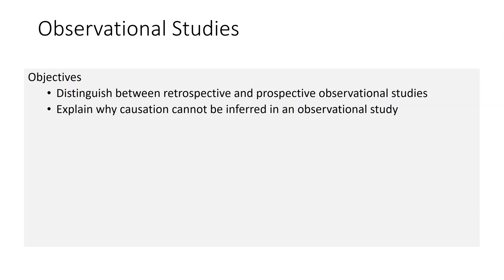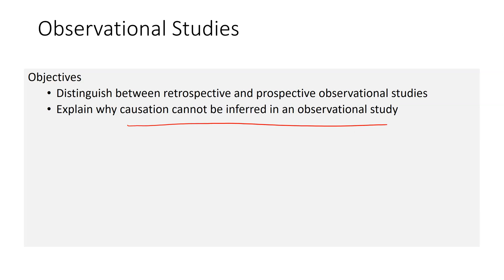There are a couple different types of observational studies. One is a retrospective study and another is a prospective study. We'll look at characteristics of each, some limitations, and then touch on why causation cannot be inferred from an observational study.